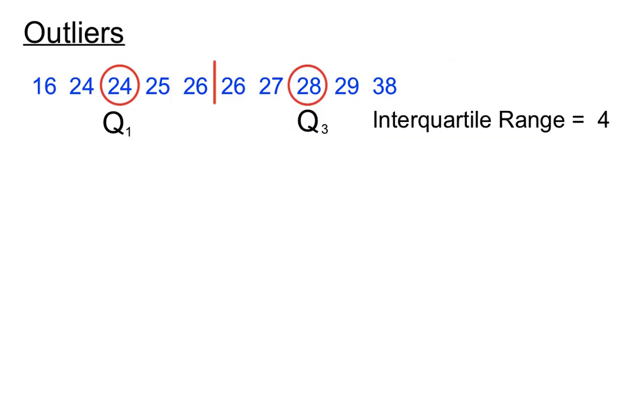Let's have a look at these scores now. Interquartile range we just said was 4. We've got two scores here: our lowest score is 16 and our highest score is 38. Just by looking at them, they're a fair way from the other scores. But we need to figure out whether we can class 16 as an outlier or 38 as an outlier.